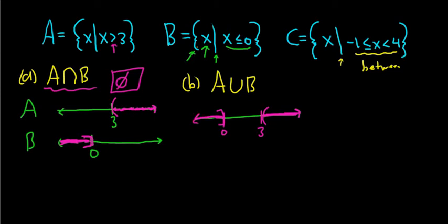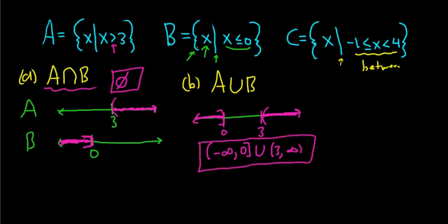So the answer in interval notation would be parentheses, negative infinity, 3 to 0, bracket, union, and then parentheses, 3 to infinity. So that would be the answer for the union of these two sets.